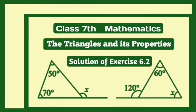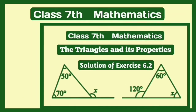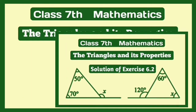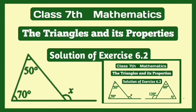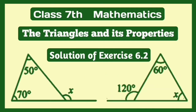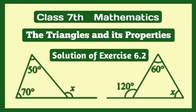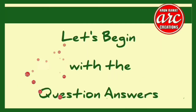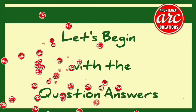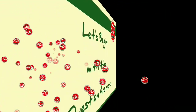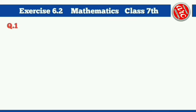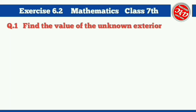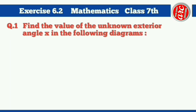Today we are going to do the solution of Exercise 6.2, Triangles and its Properties, Class 7 Mathematics. So without further ado, let's begin with the questions. Question number one: find the value of the unknown exterior angle X in the following diagrams.